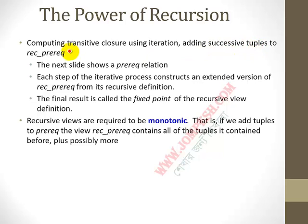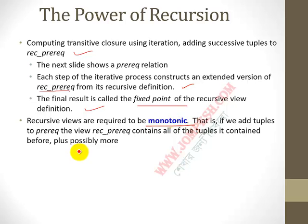By adding successive tuples to rec_prerequisite through iterations, we compute the transitive closure. Each step of the iteration process constructs an extended version of the prerequisite. The final result is called the fixed point of the recursive view definition. Recursive views are required to be monotonic — meaning if we add tuples to prerequisite, the view rec_prerequisite contains all tuples it contained before, plus possibly more.